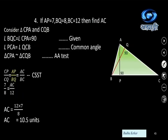One more question: AP is given as 7, BQ as 8, BC as 12, and we have to find AC. Consider triangles CPA and CQB. Both have 90-degree angles. Angle PCA and angle QCB share the common angle at C. So triangle CPA is similar to triangle CQB by AA test.